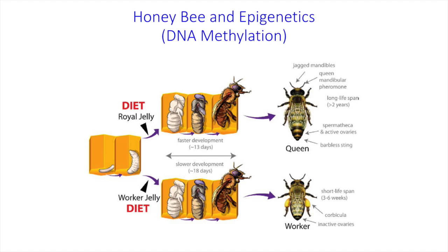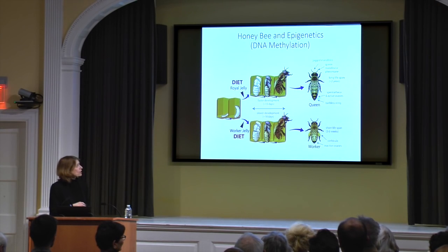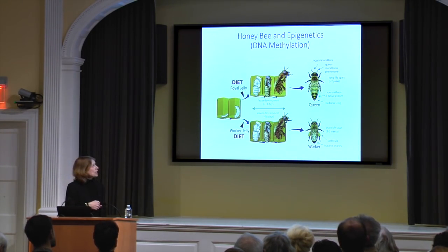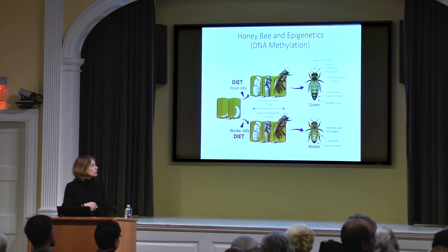Finally, the well-known queen bee from the honey bees. Here we also have queen bee and worker bees, but it's a little different because it depends on diet, which is very interesting. They all have the same genome, but in the larva stage it depends what food you get — do you get the royal jelly or the worker jelly? If you get the royal jelly, you become a queen; if you get the worker jelly, you become a worker. Again, the queen is bigger, has a much longer lifespan, only reproduces, and not much brain function — all of this due to the effect of diet.